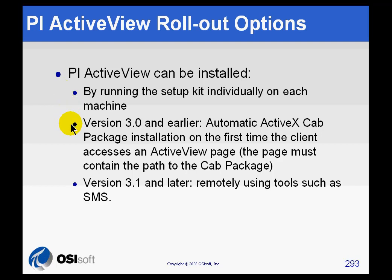Most people would like a more sophisticated way of doing it, rolling it out to hundreds of users. We do have support in the earlier versions for an automatic cab file download, similar to what you would see if you go to a Disney website and they say you need to use the Flash plugin to look at the content here. There are details in the ActiveView documentation on how to set up that cab file.